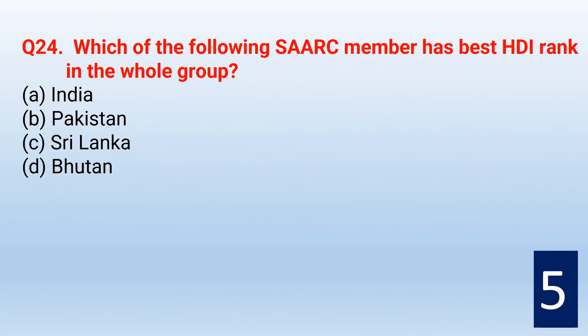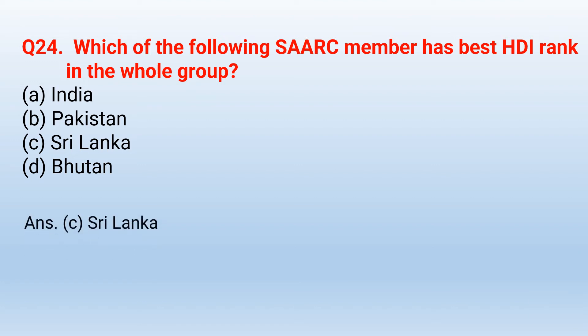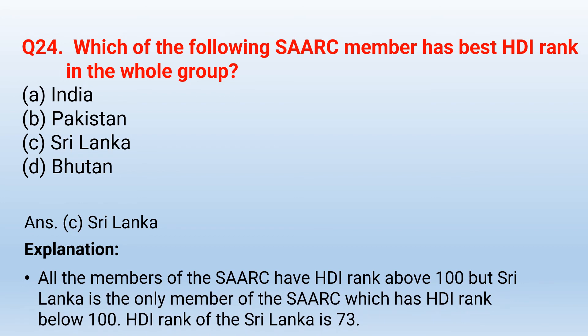Which of the following SAARC members has the best HDI rank in the whole group? The correct option is option C — Sri Lanka. All the members of SAARC have an HDI rank above 100, but Sri Lanka is the only member of SAARC which has an HDI rank below 100. The HDI rank of Sri Lanka is 73.